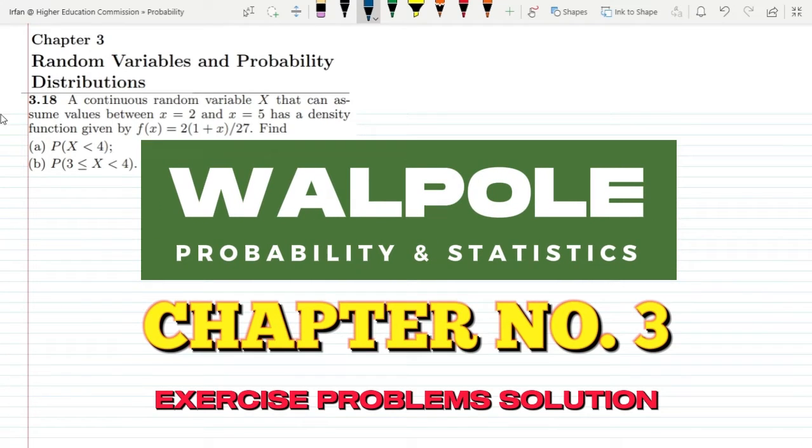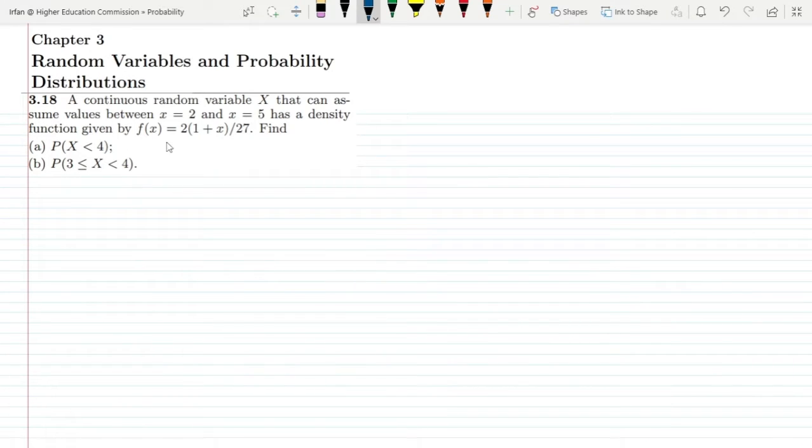Welcome back guys, I hope all of you will be fine. This is question 3.18 and the statement of it is: a continuous random variable X that can assume values between x = 2 and x = 5 has a density function given by f(x) = 2(1 + x) / 27.